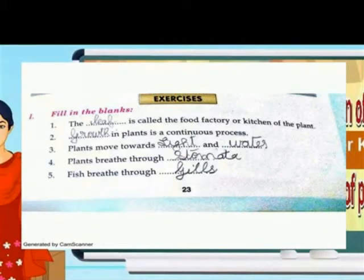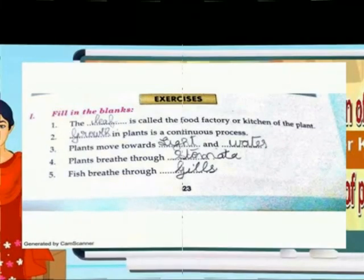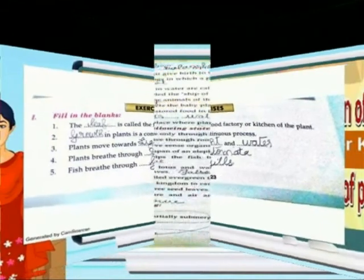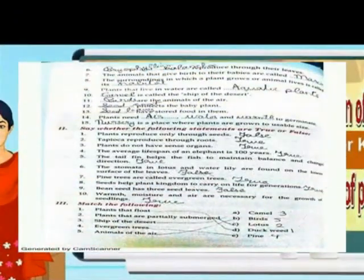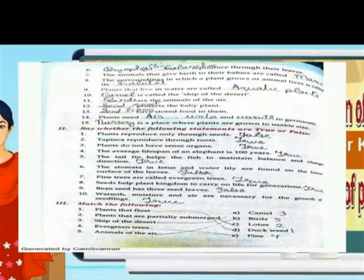Plant moves towards light and water. Plants breathe through stomata. Fish breathe through gills. Reproduction. The animals that give birth to their babies are called mammals.